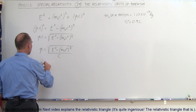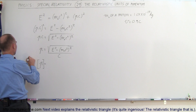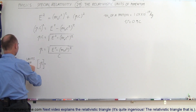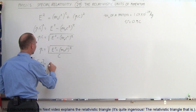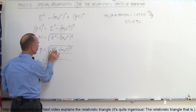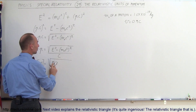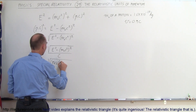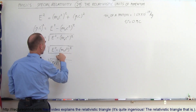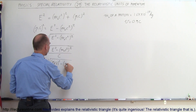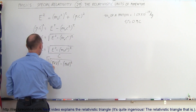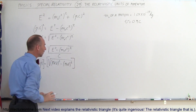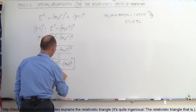We can say that the units of P — I'll go ahead and bracket it to denote the units of momentum — are going to be equal to the square root of: the units of energy in terms of MeV, squared, minus the units of that same quantity, which is MeV squared. And we divide that by C.